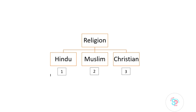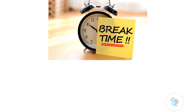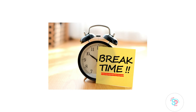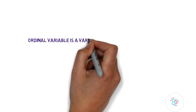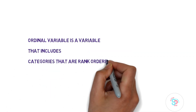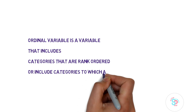After this, we're going to discuss ordinal variables. Before going to the ordinal variable, my suggestion is to pause the video, have a sip of water, look around, and take two minutes of break if you want, then come back and resume. Learning without breaks makes people tired, so it's crucial to take breaks now and then. Let me start with the ordinal variable. An ordinal variable is a variable that includes categories that are rank-ordered, or includes categories to which a rating scale is attached.